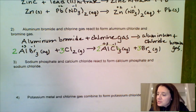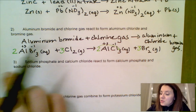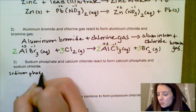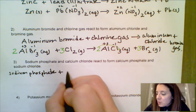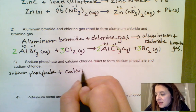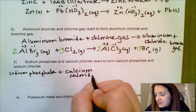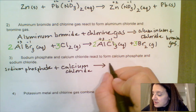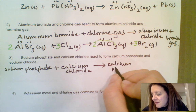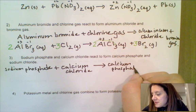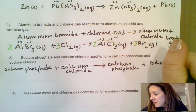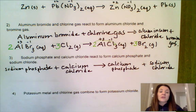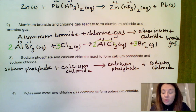Moving on to sodium phosphate and calcium chloride. We do the word equations first: sodium phosphate reacting with calcium chloride. Remember — you must use an arrow, never an equal sign, since this is not a math equation. It forms calcium phosphate and sodium chloride. When you have two compounds coming together like this, these are called double displacement or double replacement reactions — they swap partners.